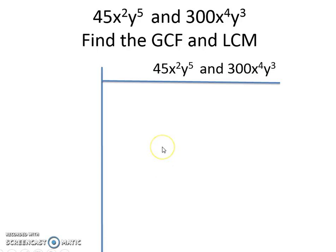The first thing when I find the greatest common factor is I just look at the number part first and think about the numbers that can divide evenly into 45 and 300. And the first number that comes to my mind is 5.